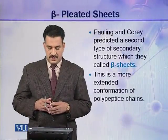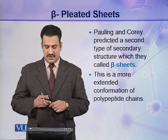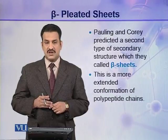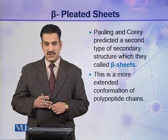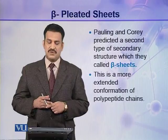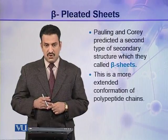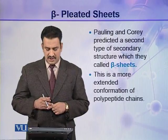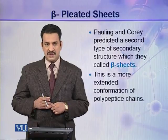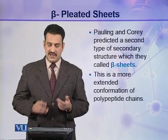Pauling and Corey predicted a second type of secondary structure which they called beta sheets, or generally beta conformations. This is a more extended conformation of a polypeptide chain as compared to the alpha helix.